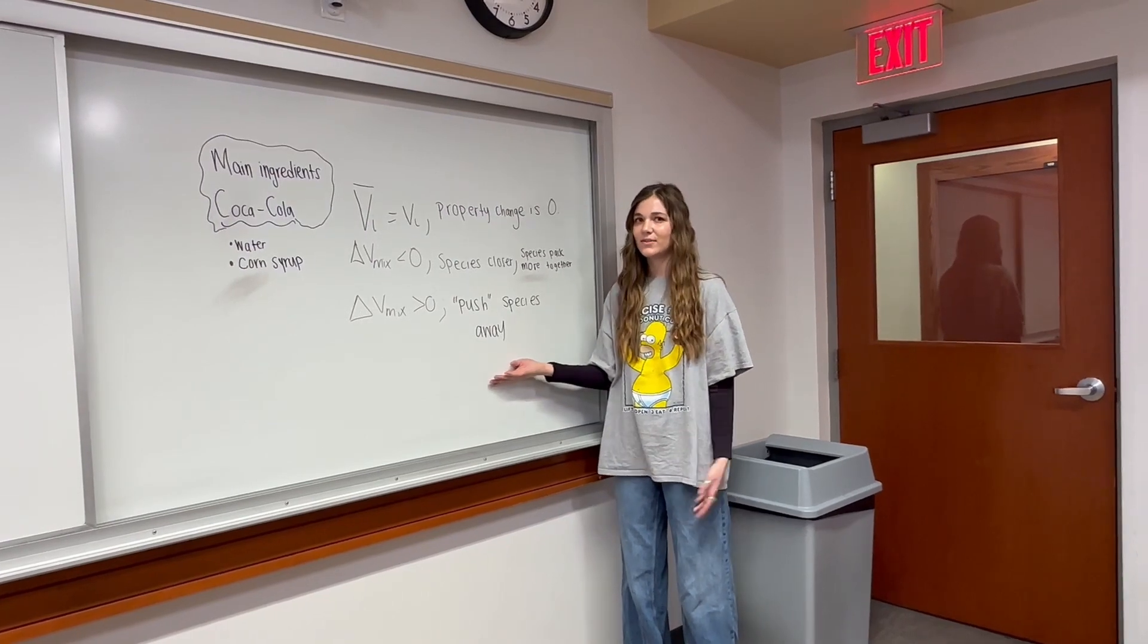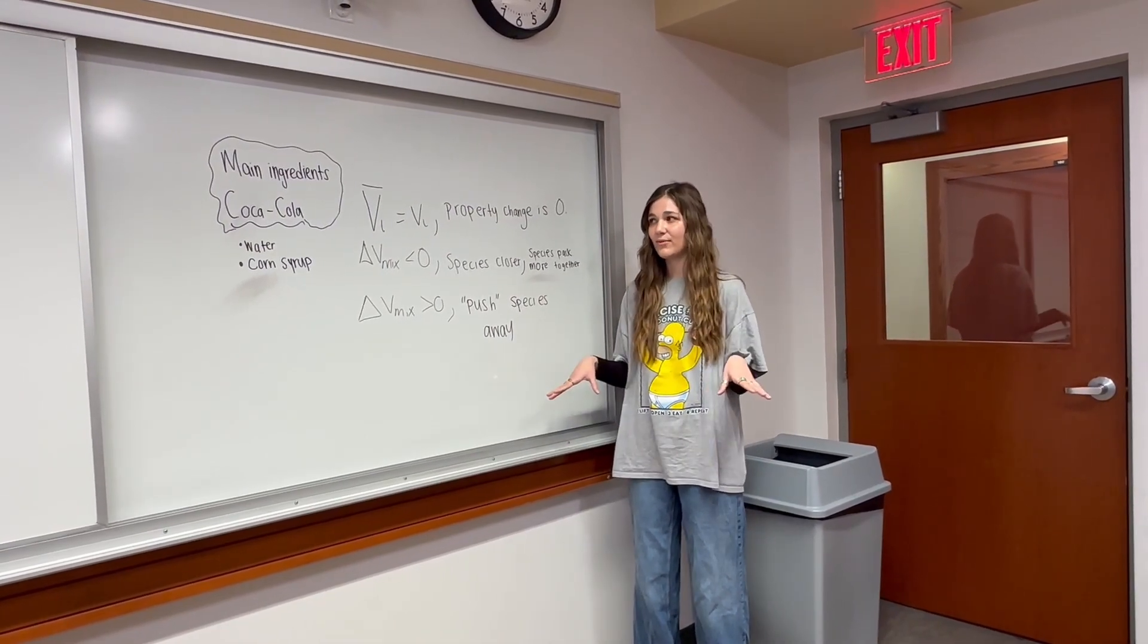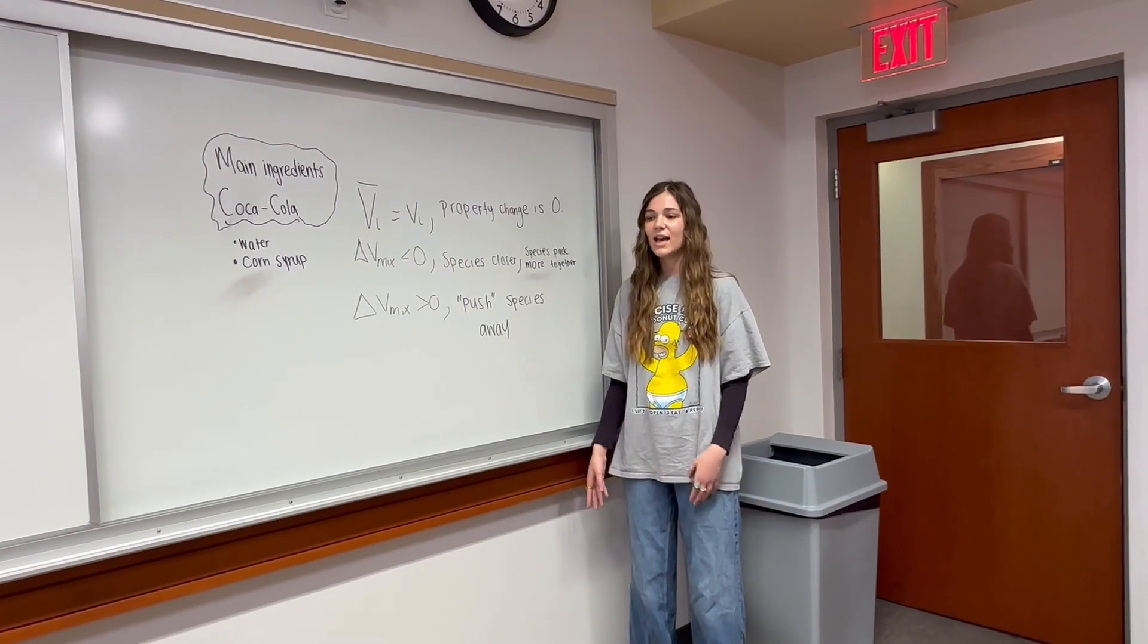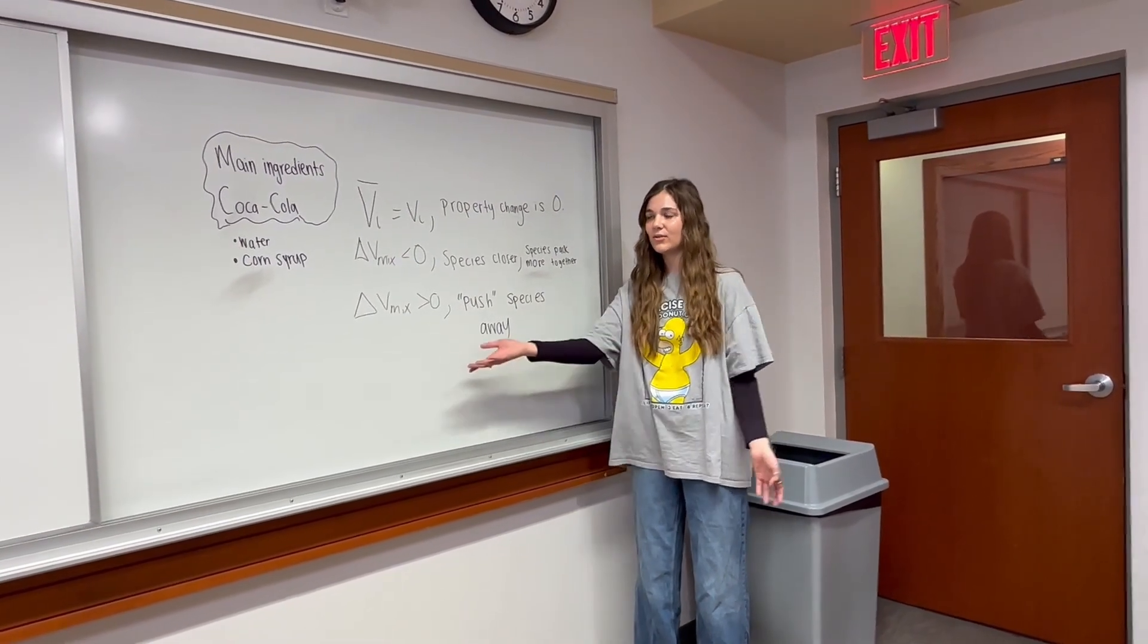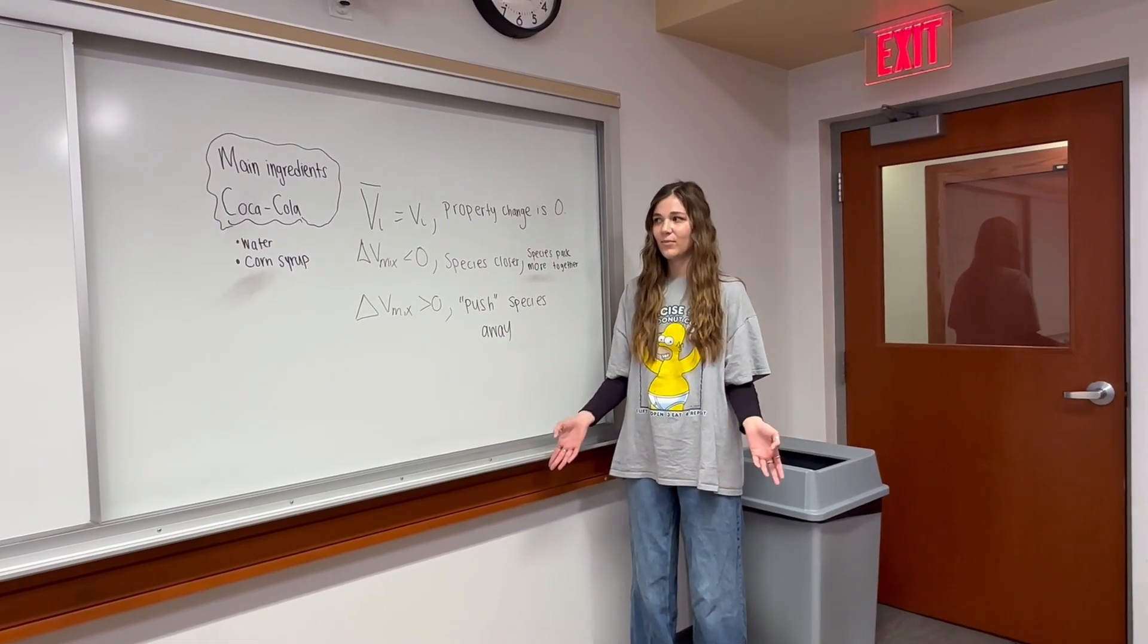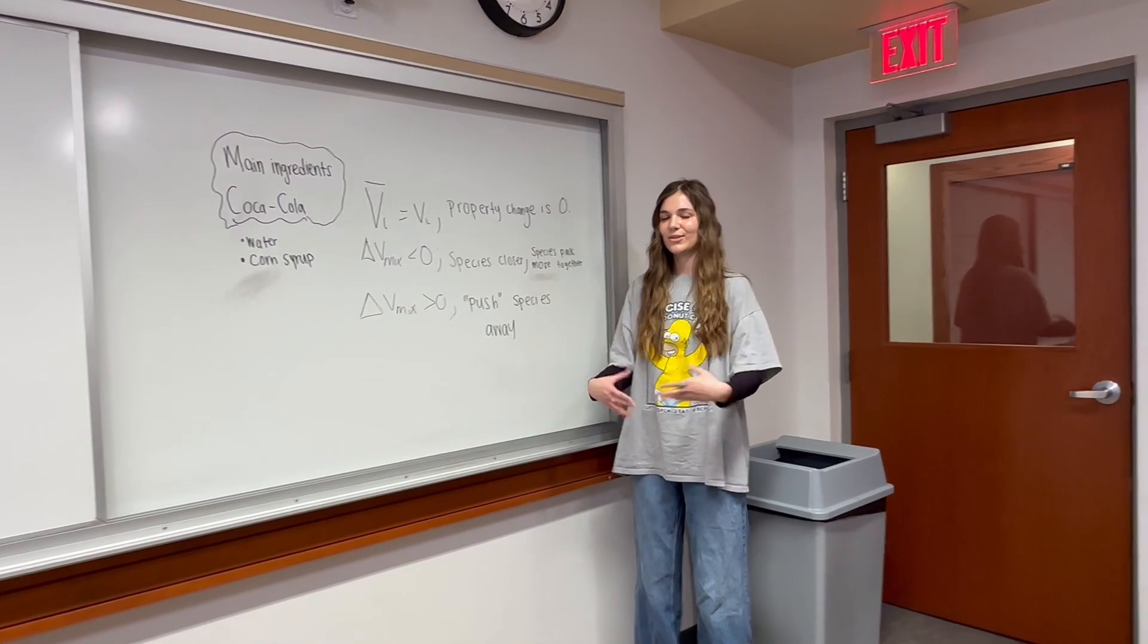The third case is if delta v mix is greater than zero, which means the species are pushing away from each other. So this can be useful for engineers in the beverage industry to see how big of a tank you need for mixing these ingredients together, but also to see how much product is obtained at the end for how the species interact with each other.